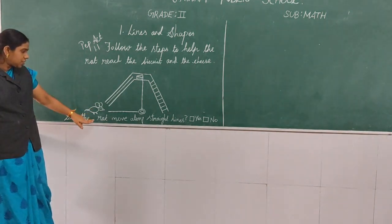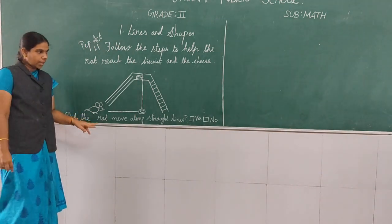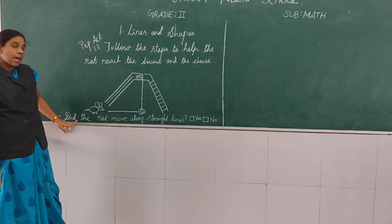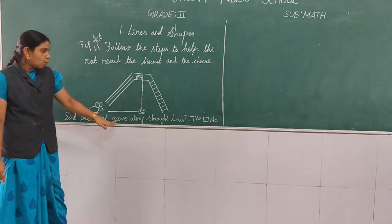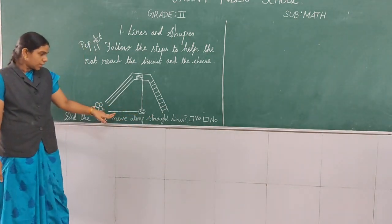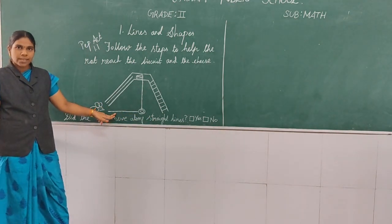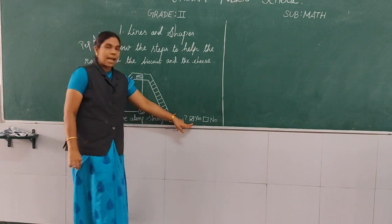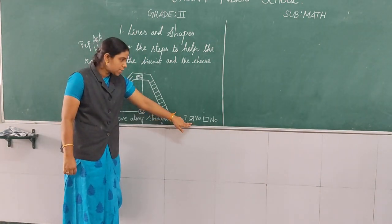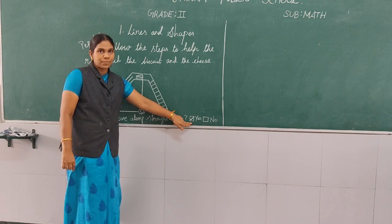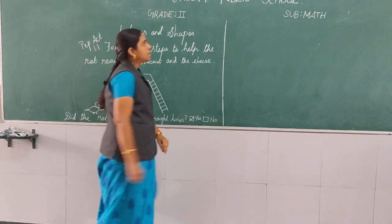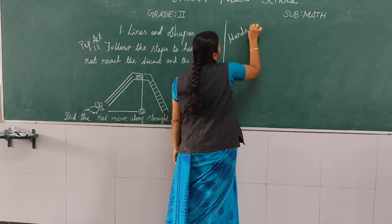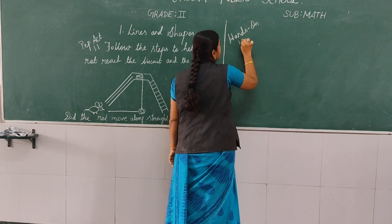So, see children, page number one. Take pencil. Below this picture, like the rat, they will pass on the question: did the rat move along straight lines? Straighten — yes. So here you tick this box. In this box you have to put a tick mark. Next we are going to see hands-on activity 1.2.